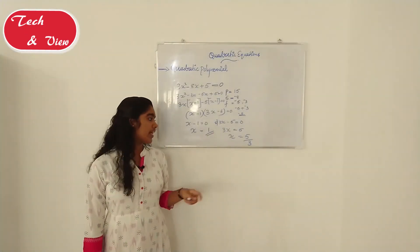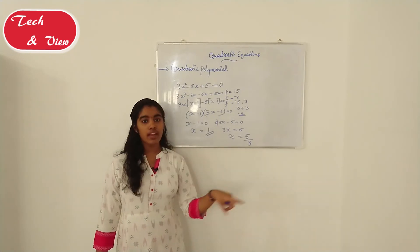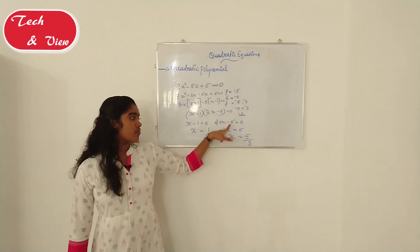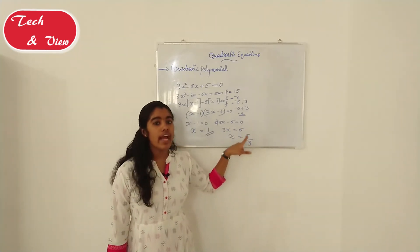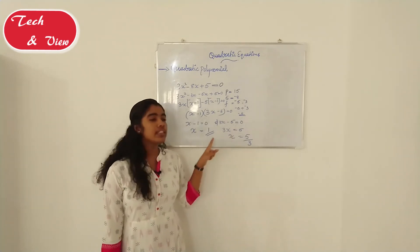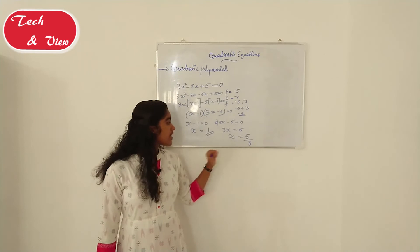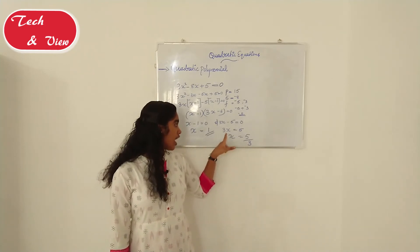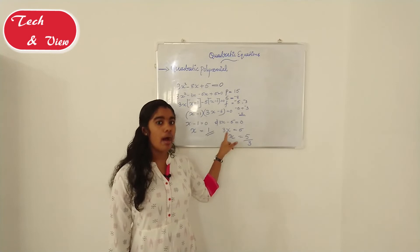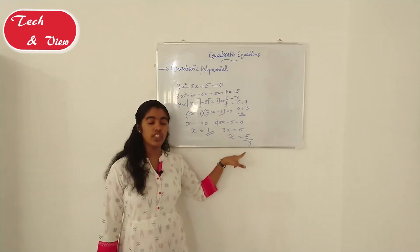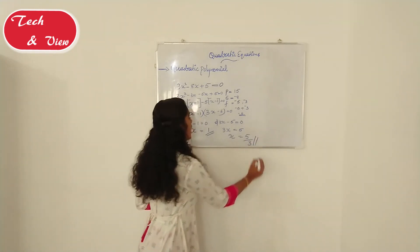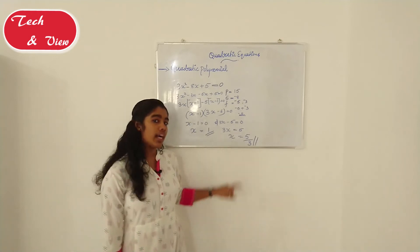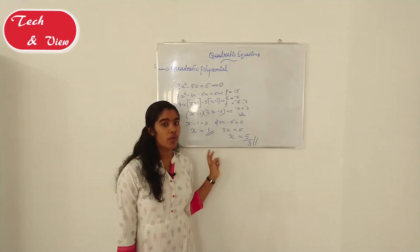So if we transpose to the next side and make a division, that means x is equal to 5 by 3. So 5 by 3 is the value of x, or the zero of the polynomial.